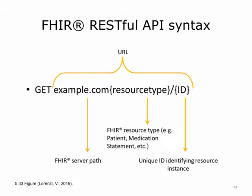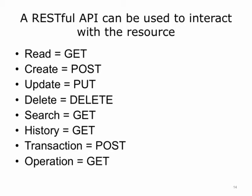A RESTful API can be used to interact with a resource. An API, or Application Programming Interface, is a list of commands or operations that a server provides so that any interested client application can interact with a server application. The FHIR operations consist of: Create a resource, using RESTful API command POST; Read a resource, using GET; Update a resource, using PUT; Delete a resource, using DELETE; Search, using GET; History, using GET; Transaction, using POST; and Operation, using GET. Each of the FHIR operations are described in-depth in the FHIR specification, accessible at www.hl7.org/FHIR.